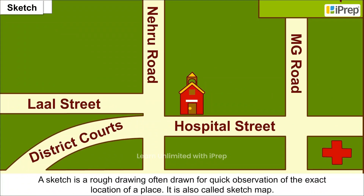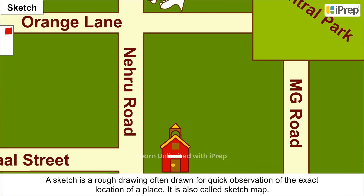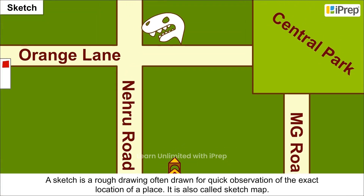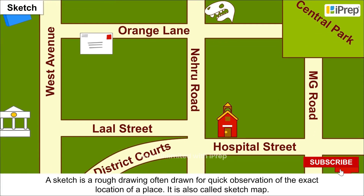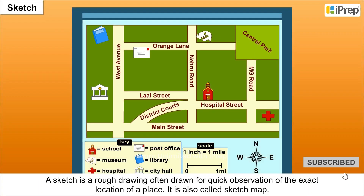Sketch. A sketch is a rough drawing often drawn for quick observation of the exact location of a place. It is also called a sketch map. For example, a person asks you about the certain location of a place.